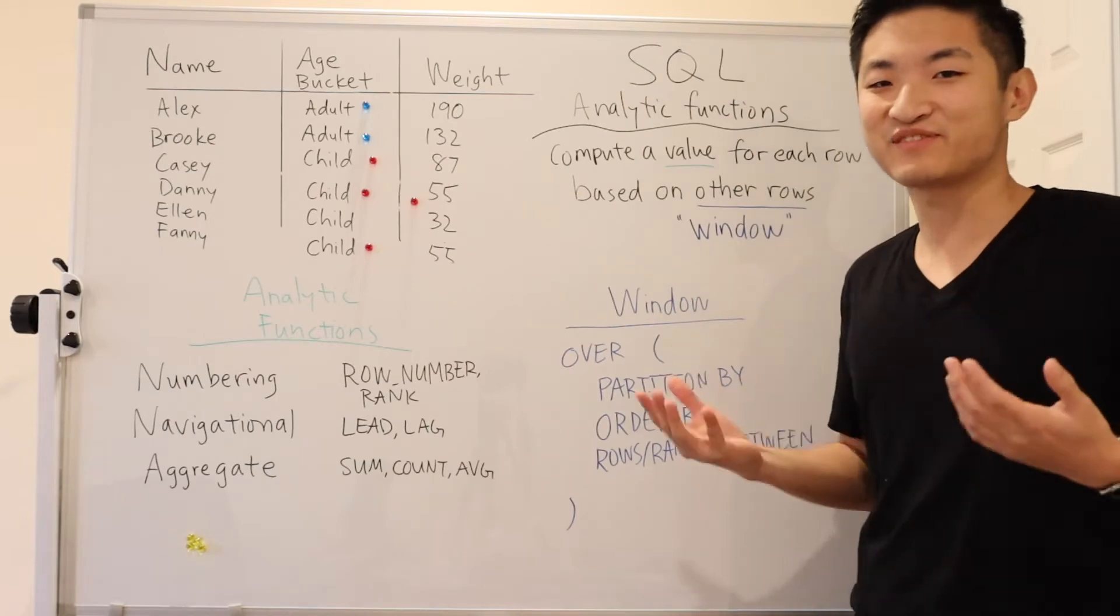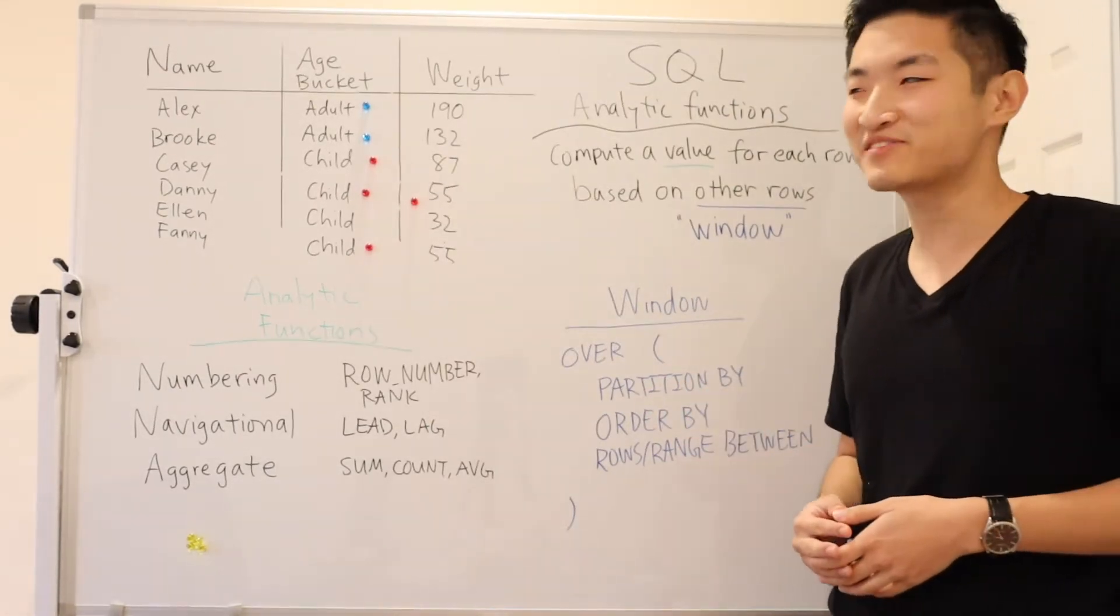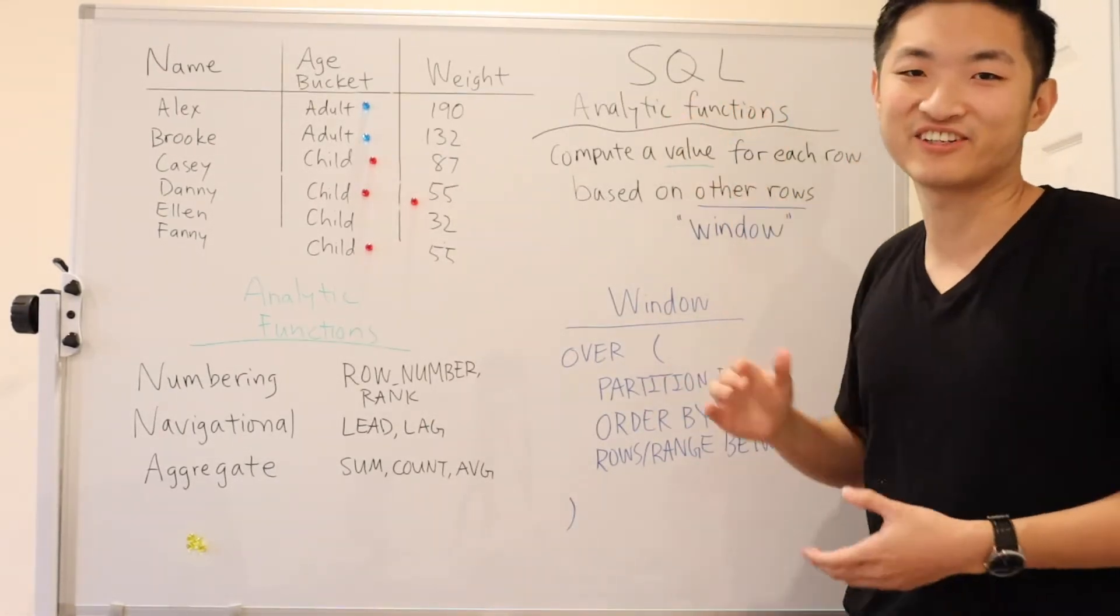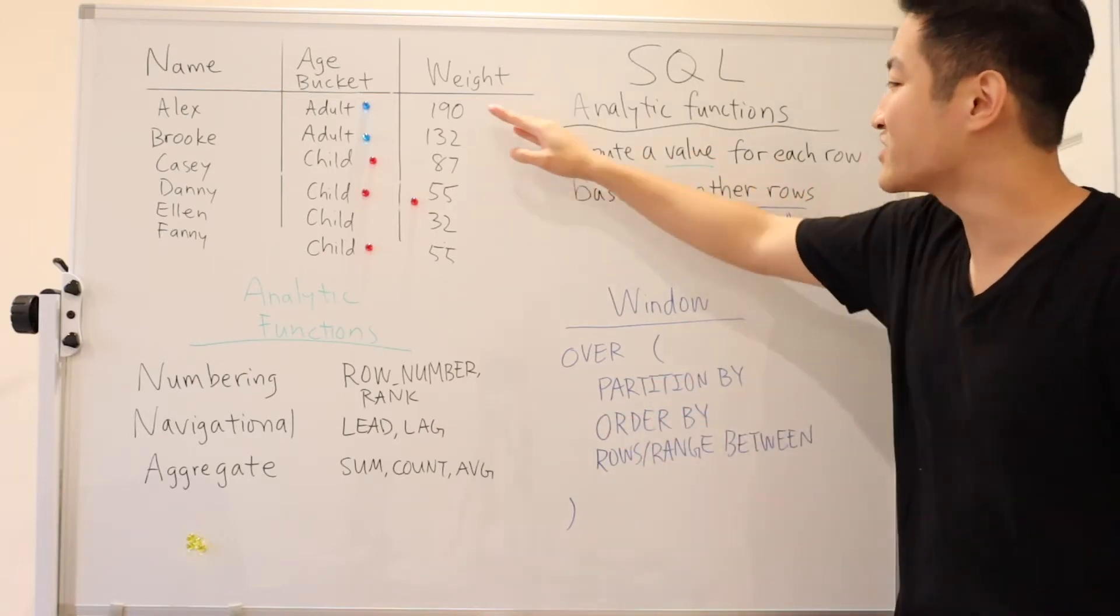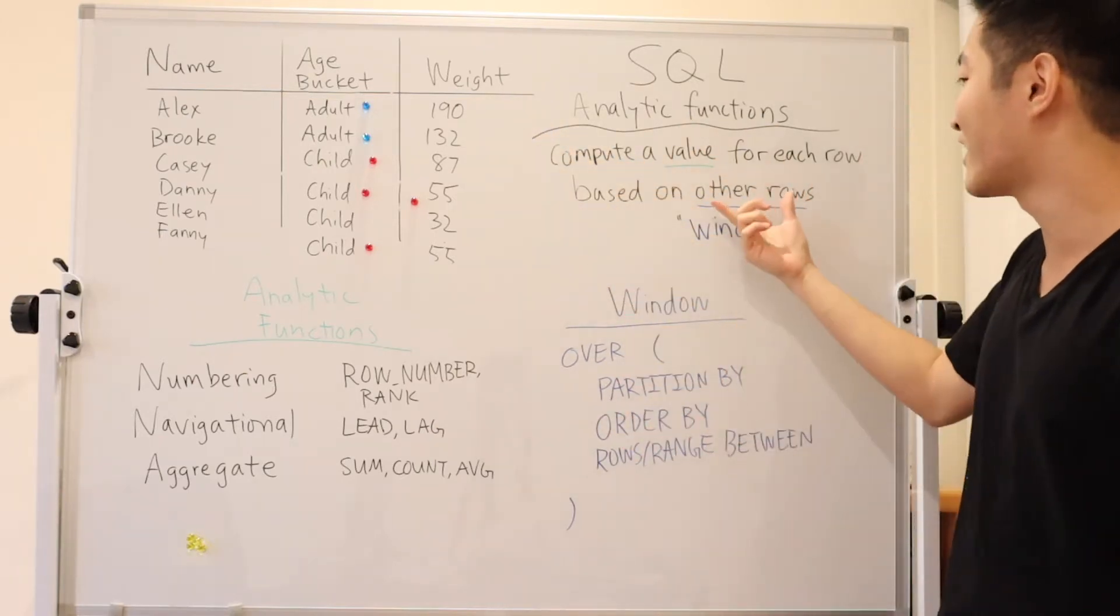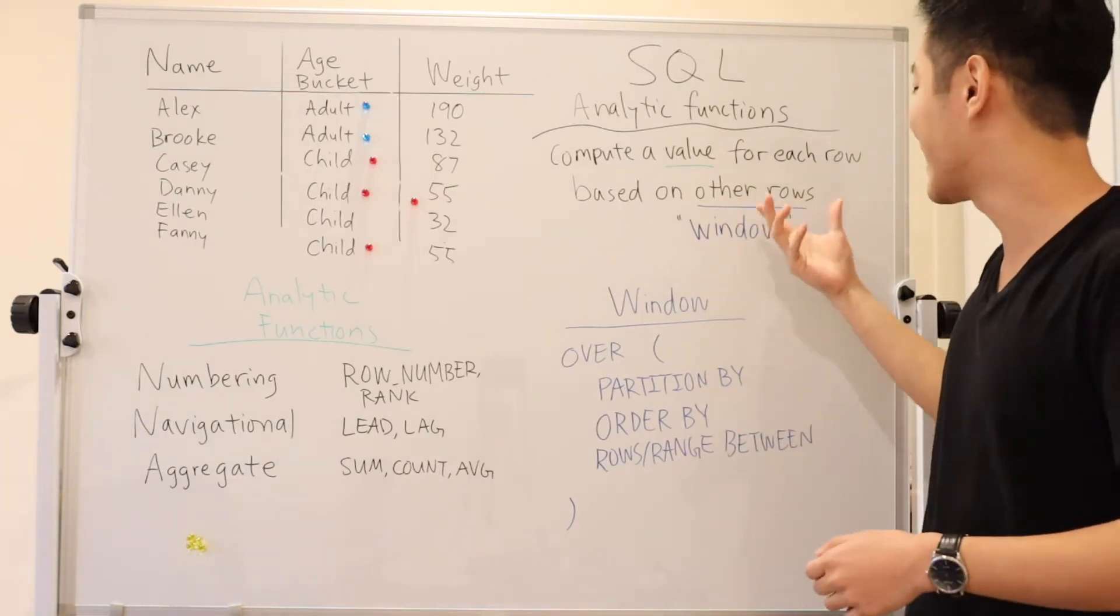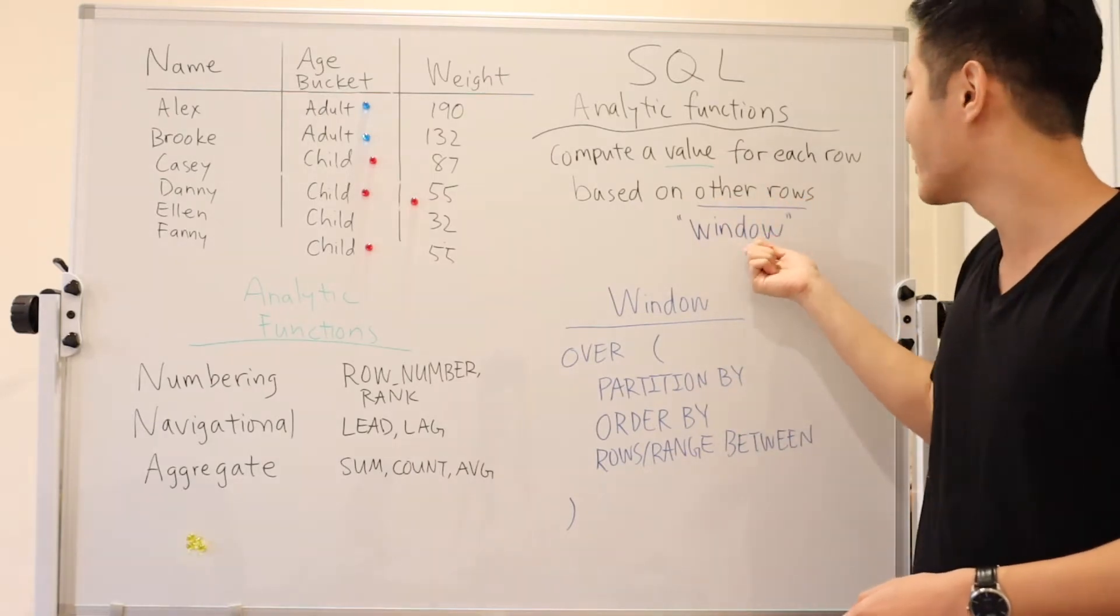Hi, I'm Dixon. In this video, we'll be talking about an advanced feature called SQL analytic functions. And these functions let you compute a value for each row based on other rows, and that collection of other rows is called a window.